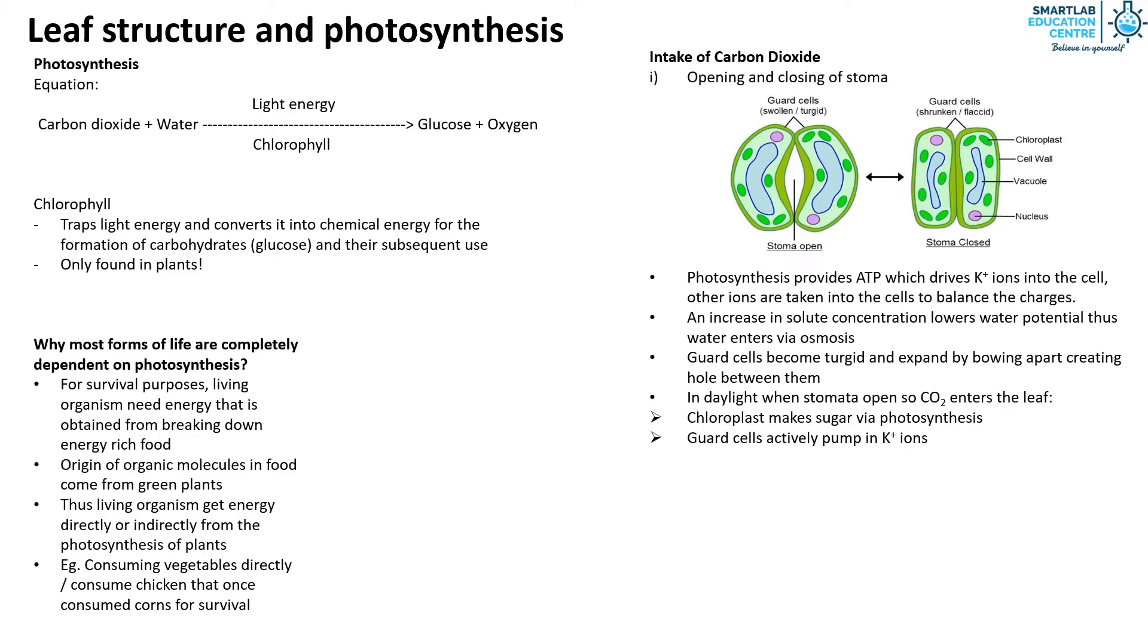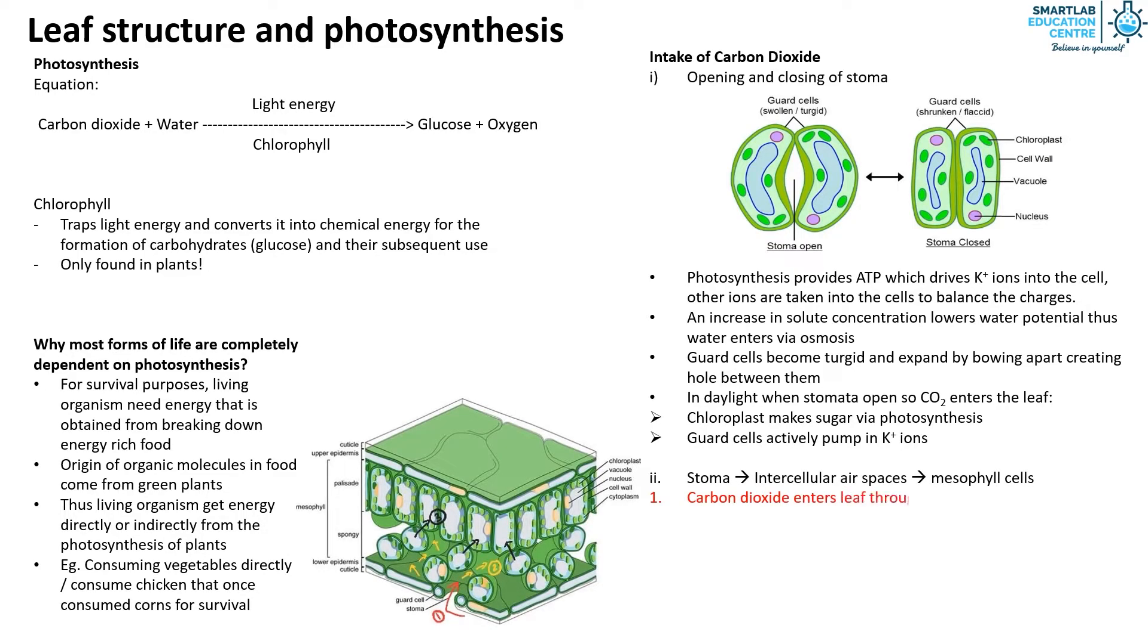Once carbon dioxide enters the leaf through diffusion through stomata into the intercellular airspaces, the carbon dioxide dissolves into a thin film of moisture layer found on mesophyll cells. The dissolved carbon dioxide then diffuses from cell to cell until it reaches the chloroplasts of mesophyll cells.